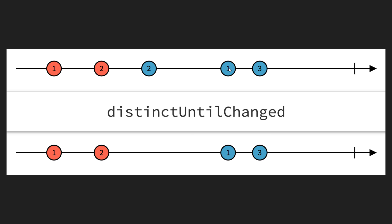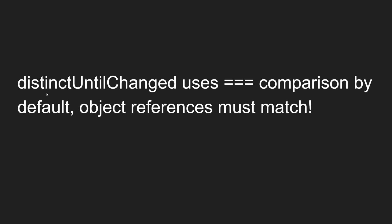The fourth value 1 is checked with the previous item 2 — they are not equal, so 1 is emitted. You need to understand that 1 was already emitted the first time, but distinctUntilChanged only checks with the previous item, not the entire series. The last item 3 is checked with the previous item 1 — they are not equal, so 3 is emitted.